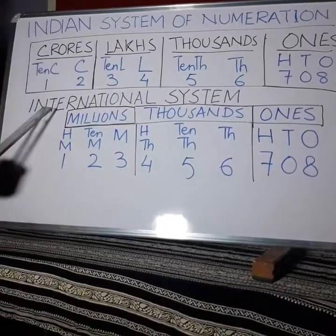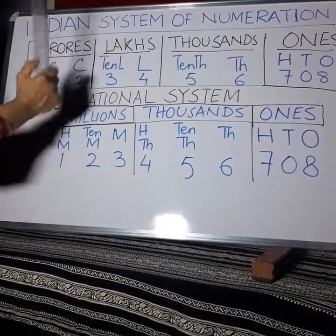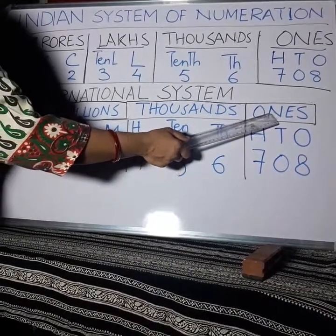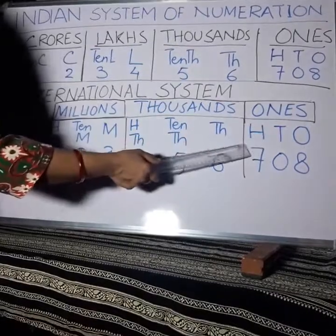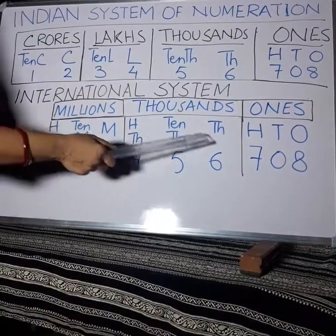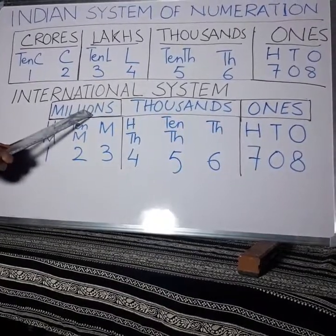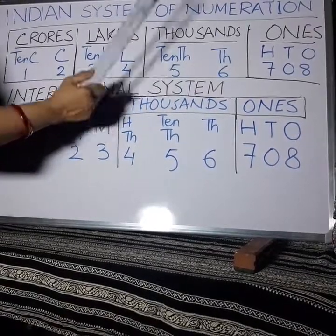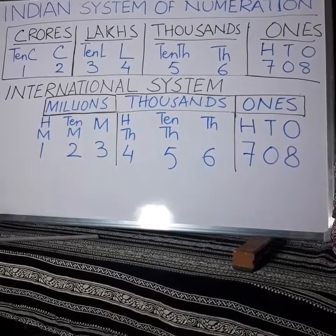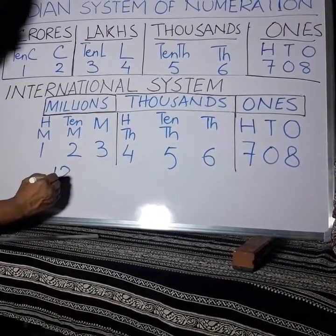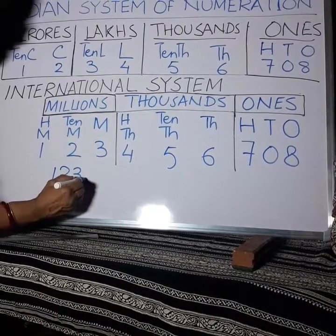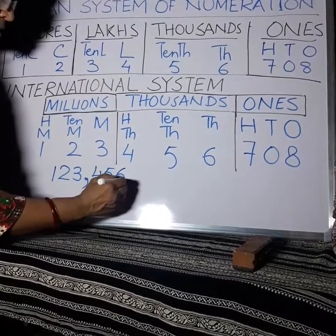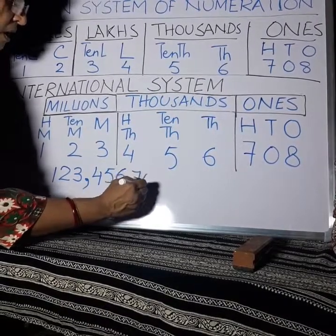Now we will compare the International System of Numeration with the Indian System. In the International System, we have three periods. One period with three places. Thousands period with three places, and Millions period with three places. When we read this number, we read 123 together — that is 123 million, 456,000, 708.